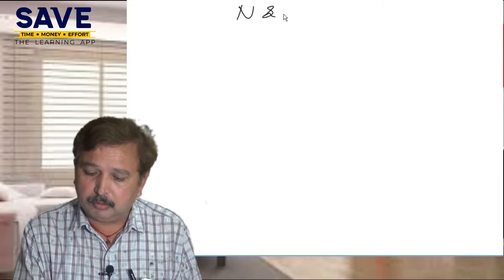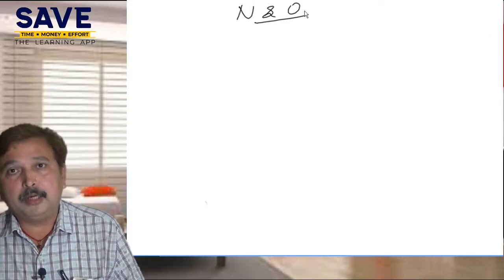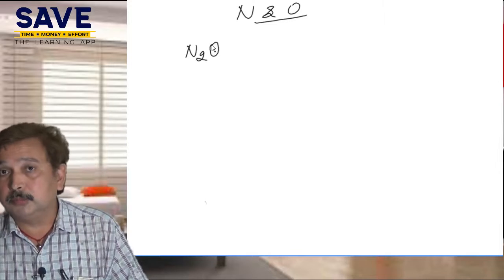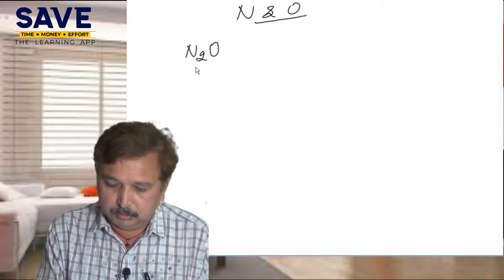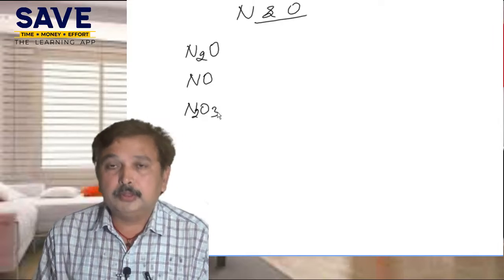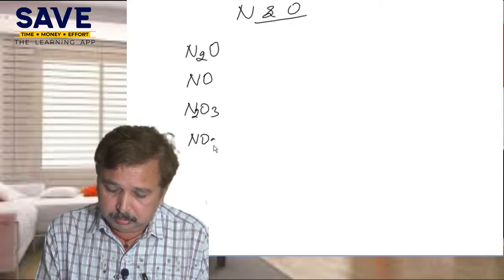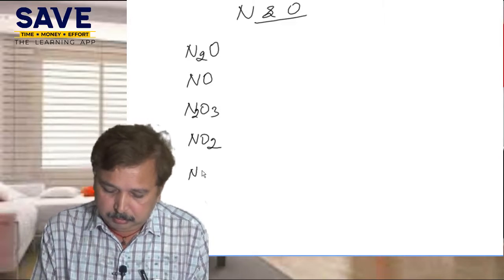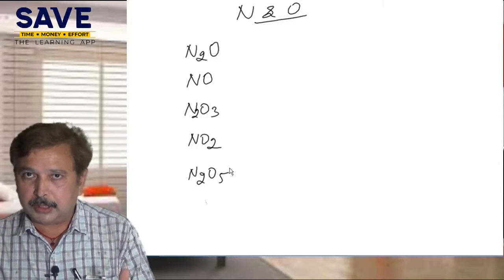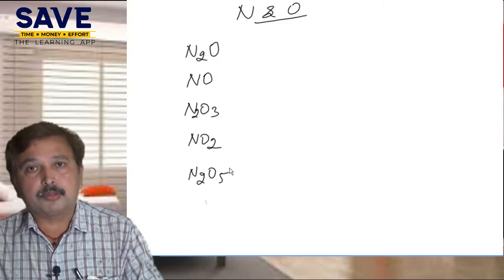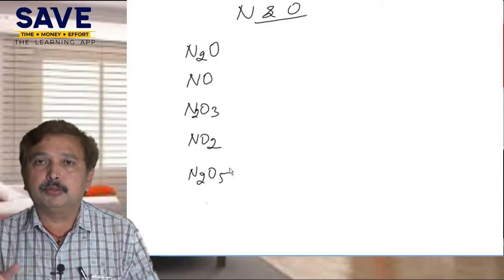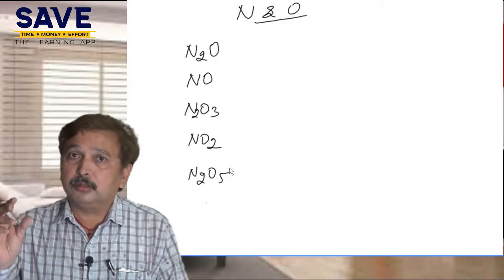We can take another example using nitrogen and oxygen, which can form more than two compounds. For example: N2O (nitrous oxide, also known as laughing gas), then nitric oxide (NO), then dinitrogen trioxide (N2O3), then nitrogen dioxide (NO2), and finally dinitrogen pentoxide (N2O5).